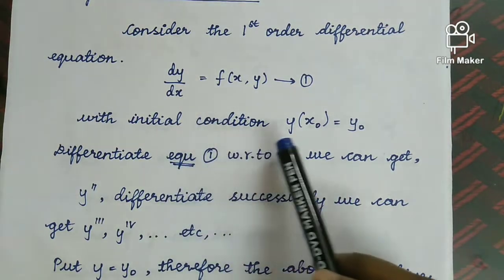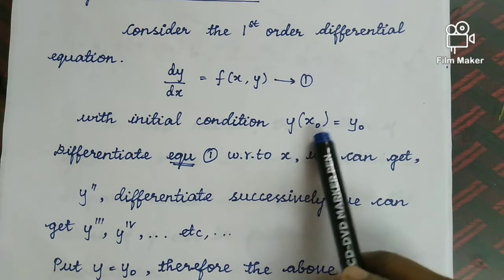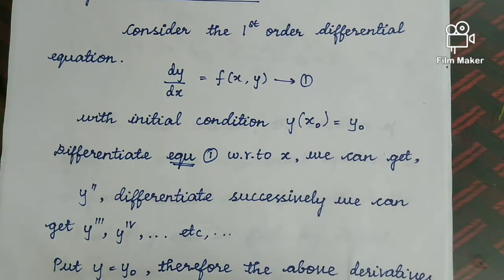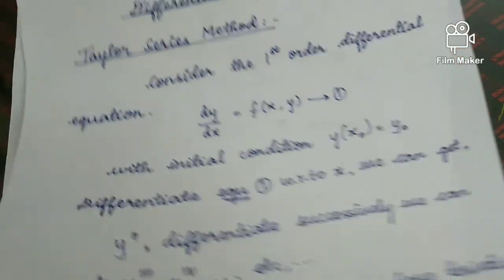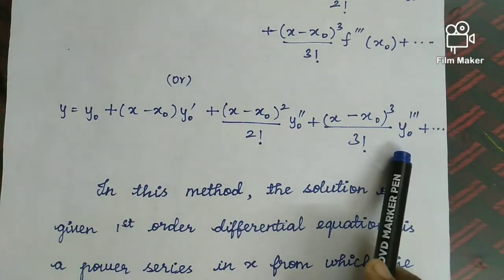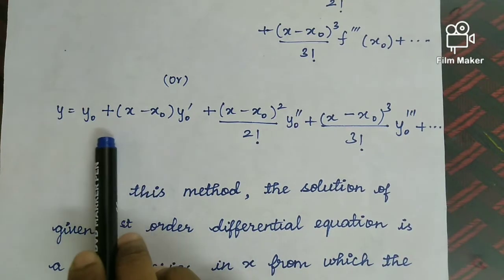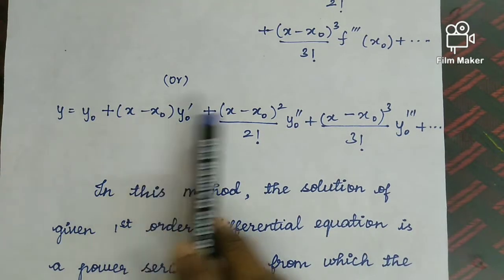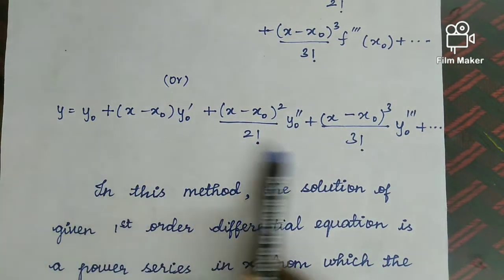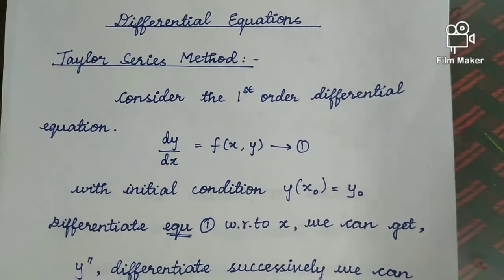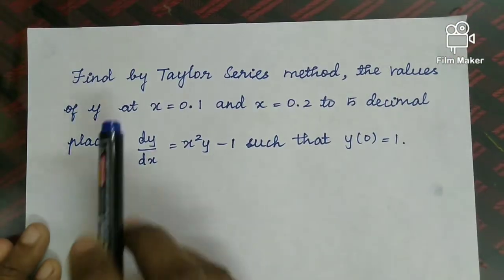We use the Taylor series formula: y of x0 equal to y0, where x0 is the initial value of x and y0 is the initial value of y. The initial condition and differential equation are given. We do successive differentiation and substitute the formula with x equal to x0, y equal to y0 to get the values. The answer is expressed as a power series in x. Substituting the required point gives us y.